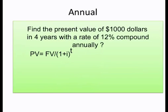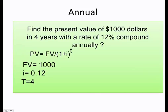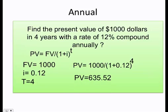Let's start. Let's say that we have a question like this. Find the present value of $1,000 in 4 years with a rate of 12% compound annually. Well, here, I'm just going to go ahead and substitute. Future value of $1,000, interest of 12, time equals to 4 years, and I just apply it. I will get, present value, $635.52.